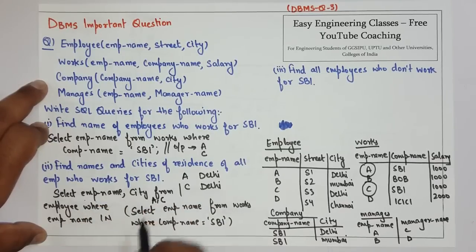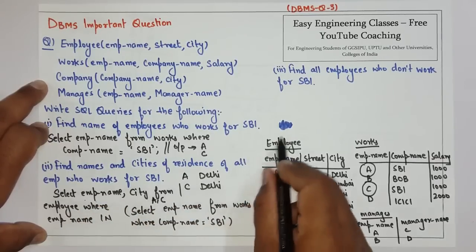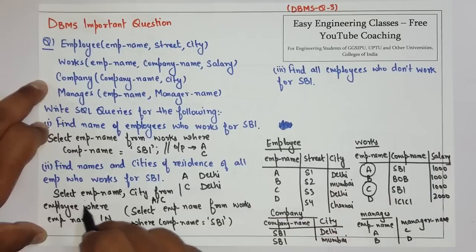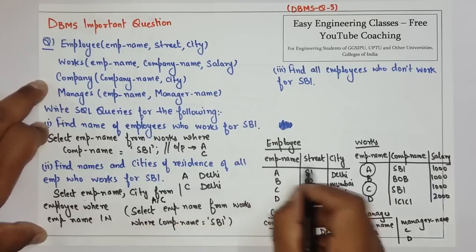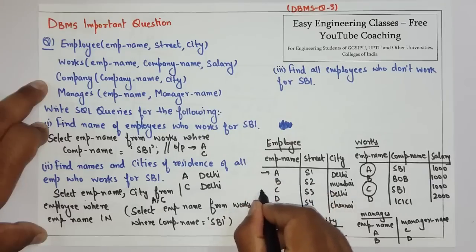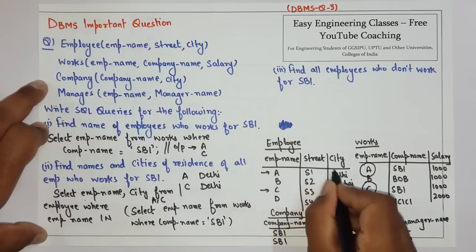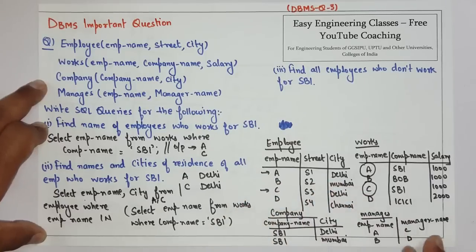So the outer query becomes: SELECT EMP_name, city FROM employee WHERE employee_name IN (A, C). There will be two results: A and C, both with the city Delhi.